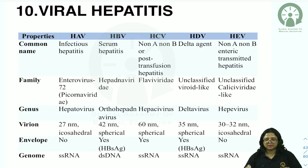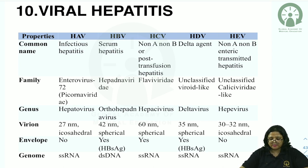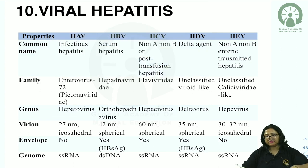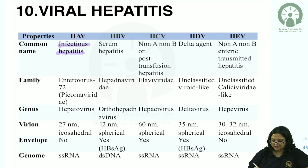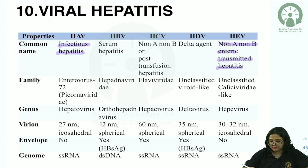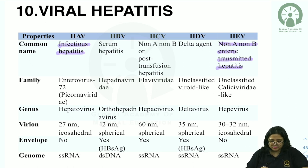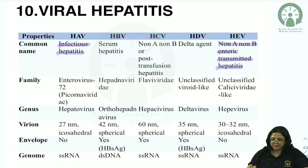Hepatitis A is known as infectious hepatitis — transmitted by the fecal-oral route. Hepatitis E was given the common name non-A, non-B enteric-transmitted hepatitis. Hepatitis B virus is the most important cause of serum hepatitis (blood-borne). Hepatitis C is known as post-transfusion hepatitis or non-A, non-B post-transfusion hepatitis. Hepatitis D (delta agent) is an incomplete virus that depends on hepatitis B virus DNA for its multiplication.